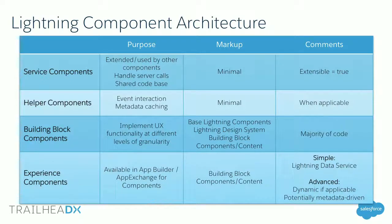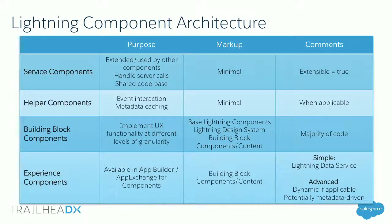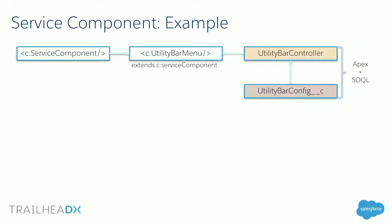Building block components are the category where you'll be spending most of your time. These typically align with our base Lightning components — the building blocks that make up a larger component. Some will be standard, some custom, some simply derivations from the Lightning Design System for added flexibility. This is where the majority of your code will live. The end goal is the experience components — those available in the App Builder that admins can configure using attributes or metadata. If they're simple, they can be powered by Lightning Data Service; if not, they can be fully dynamic and metadata-driven.